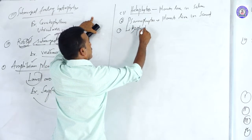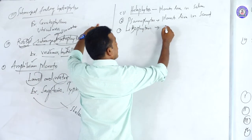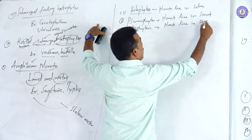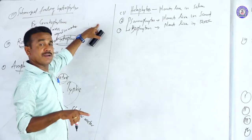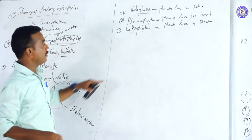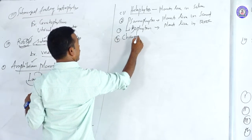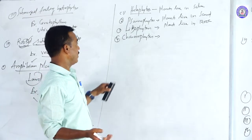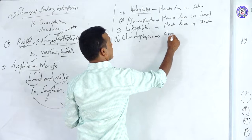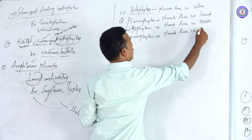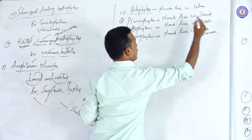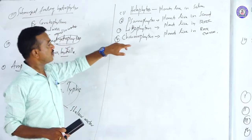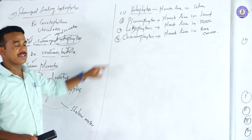Third type: lithophytes — plants that live on rocks. If a plant is present or occurring on rock, it is classified as a lithophyte. Fourth type: chasmophytes — plants living in rock crevices. If you differentiate: plants on rock are lithophytes; plants in rock crevices are chasmophytes.